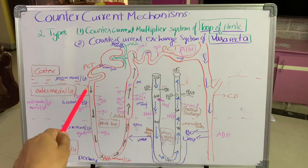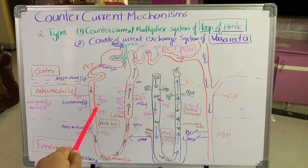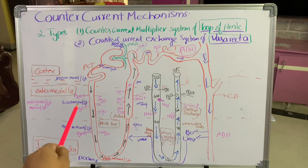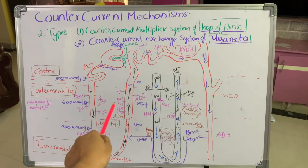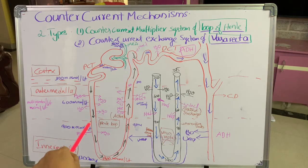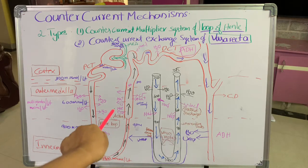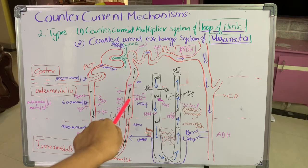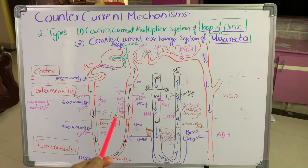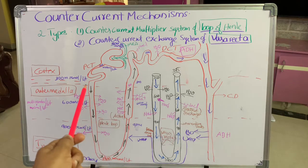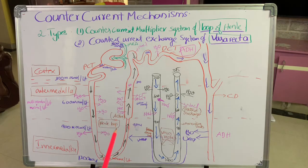As osmotic pressure increases, water from the descending limb is drawn out into the interstitial fluid due to the osmotic potential difference. As water is dragged into this region, the filtrate in the descending loop becomes more concentrated. As it moves downward and again reaches the thick segment of the ascending limb, sodium ions move outwards again, osmolarity and osmotic pressure increase further, and more water molecules are dragged from the descending limb. This movement of liquid in opposite directions in the limbs of Henle multiplies the concentration.